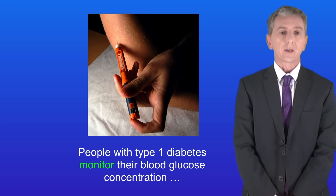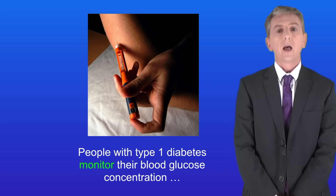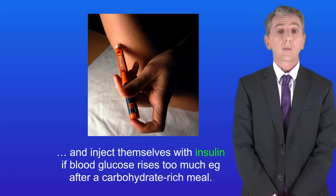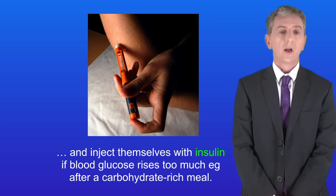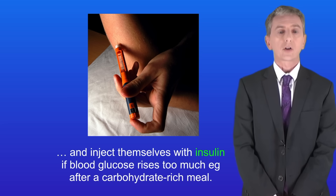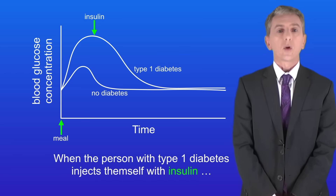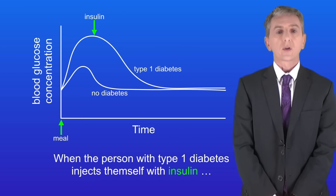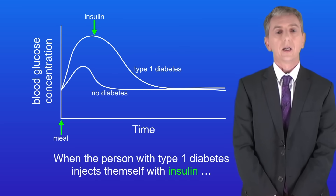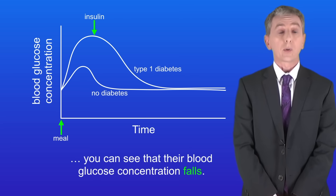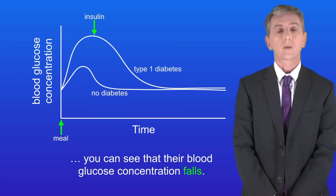People with type 1 diabetes monitor their blood glucose concentration and inject themselves with insulin if blood glucose rises too much — for example after a carbohydrate-rich meal. Looking at the graph, when the person with type 1 diabetes injects themselves with insulin you can see that their blood glucose concentration falls.